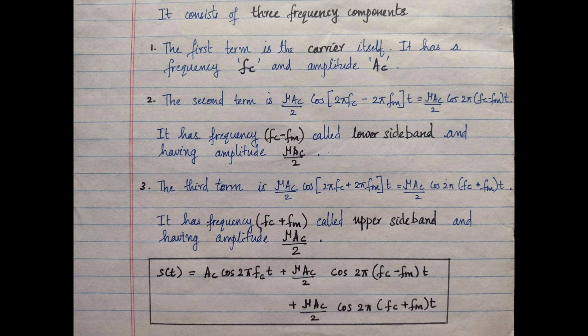The first term is the carrier itself — it has frequency FC and amplitude AC. The second term is (μ AC / 2) cos(2π(FC − FM)t); it has frequency FC − FM, called the lower sideband, with amplitude μ AC / 2. The third term is (μ AC / 2) cos(2π(FC + FM)t); it has frequency FC + FM, called the upper sideband, and also has amplitude μ AC / 2. That is all about the standard AM time domain representation.